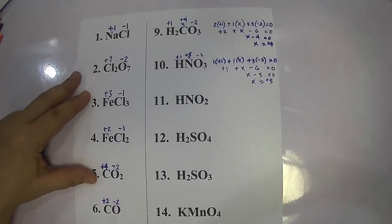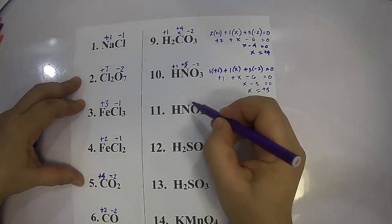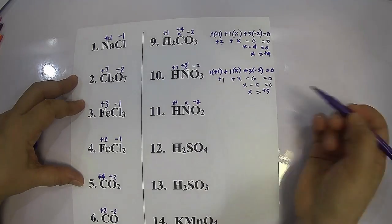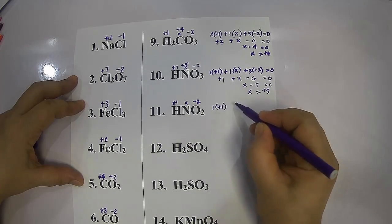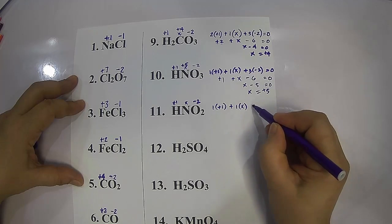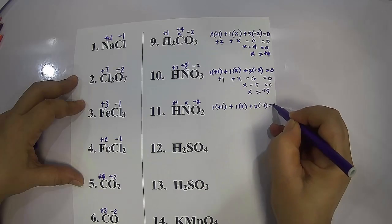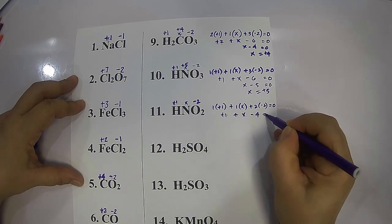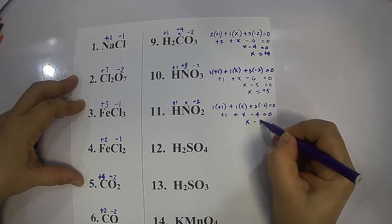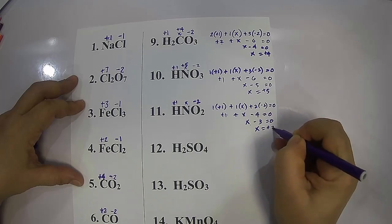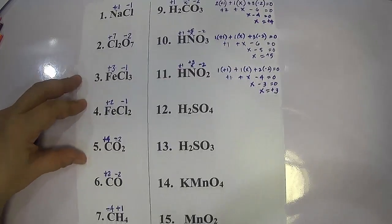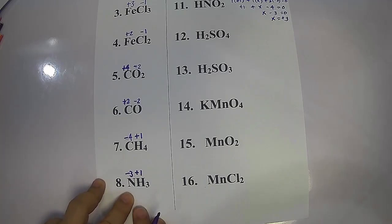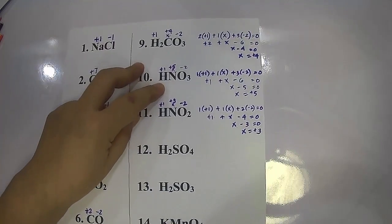For nitrous acid (HNO₂), hydrogen is positive one and oxygen is negative two. Letting nitrogen equal x: one times positive one plus one times x plus two times negative two equals zero. Positive one plus x minus four equals zero, so x minus three equals zero, therefore x equals positive three. Nitrogen in nitrous acid is positive three — compared to negative three in ammonia and positive five in nitric acid.